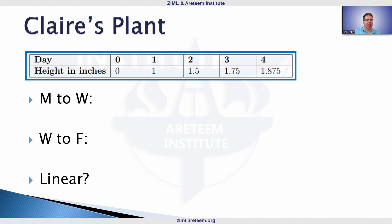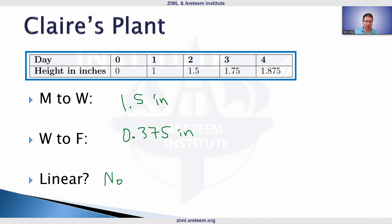The last one — Claire's chart — is in some sense the easiest because the values are given directly. From Monday to Wednesday, the height goes from 0 to 1.5 inches, so that's 1.5 inches of growth. From Wednesday to Friday, it only goes to 0.875 inches, so the growth is 0.375 inches — less than an inch. Since these differences are not equal, this plant is also not linear. Claire's plant grew the most in the first two days and the least in the last two days.